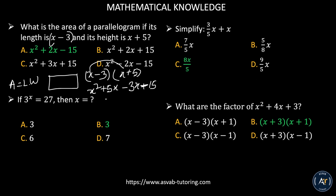Now combine the like terms: that gives you x squared plus 2x minus 15. The correct answer is letter A.